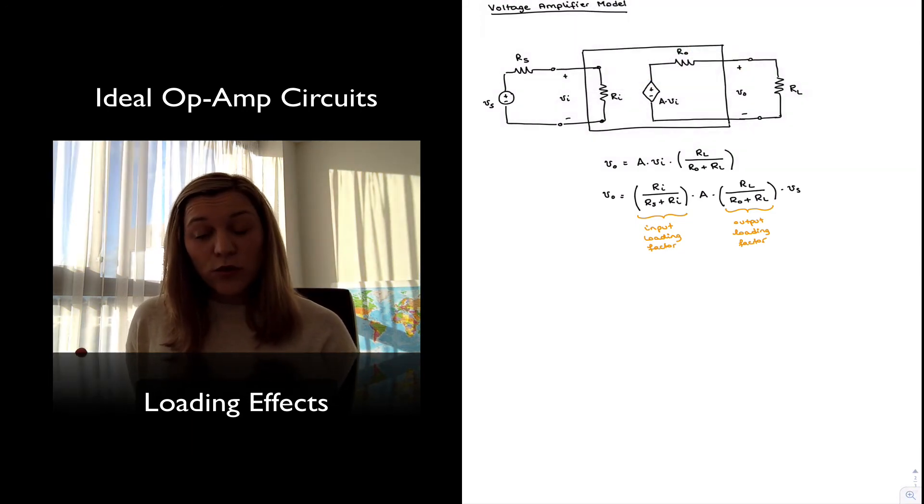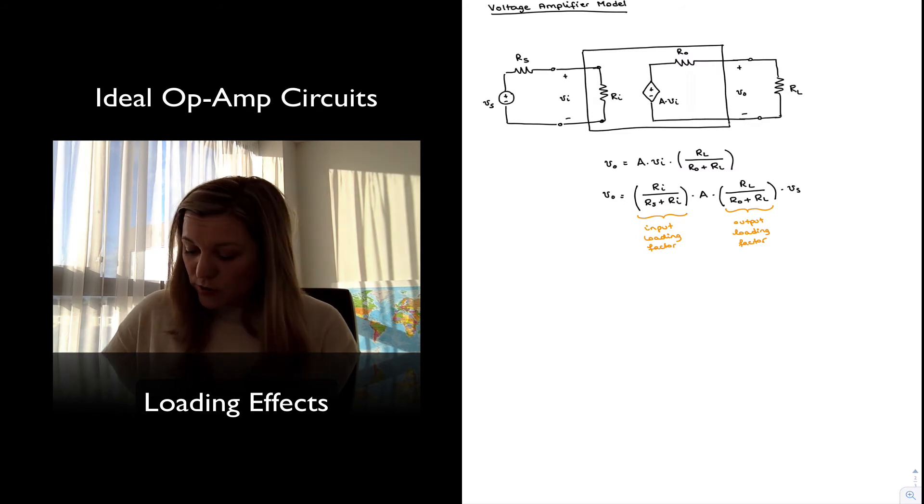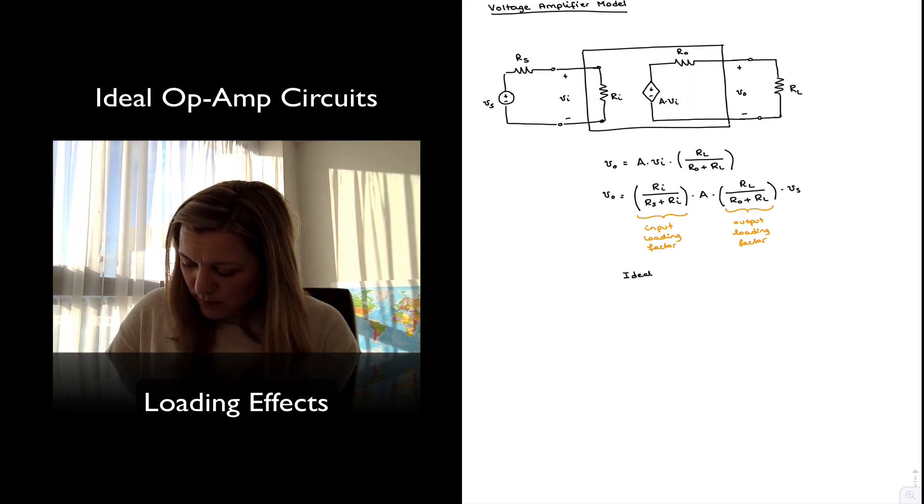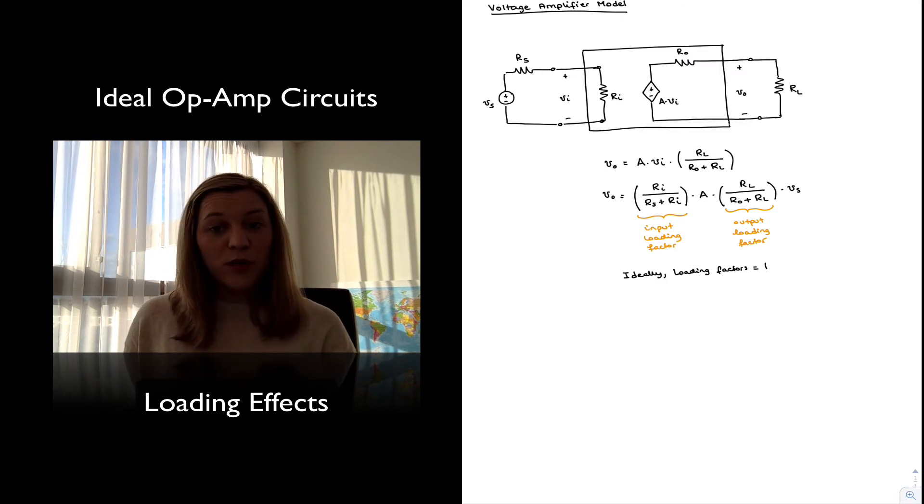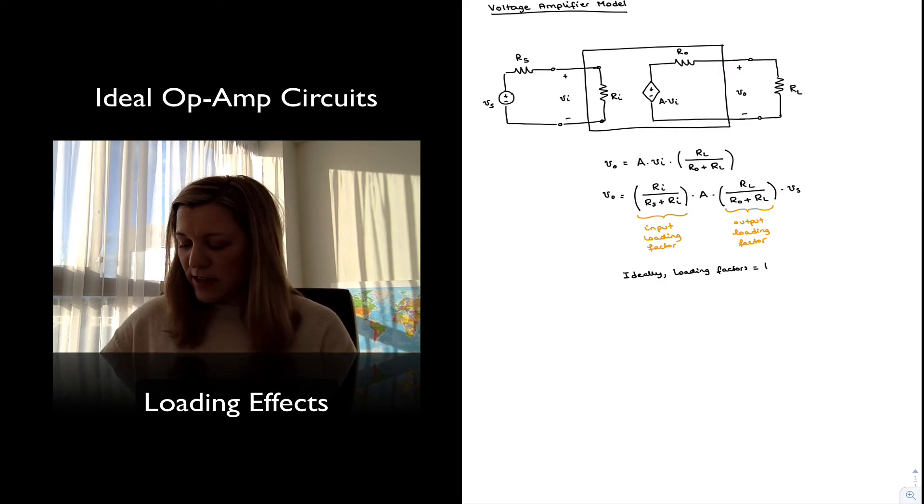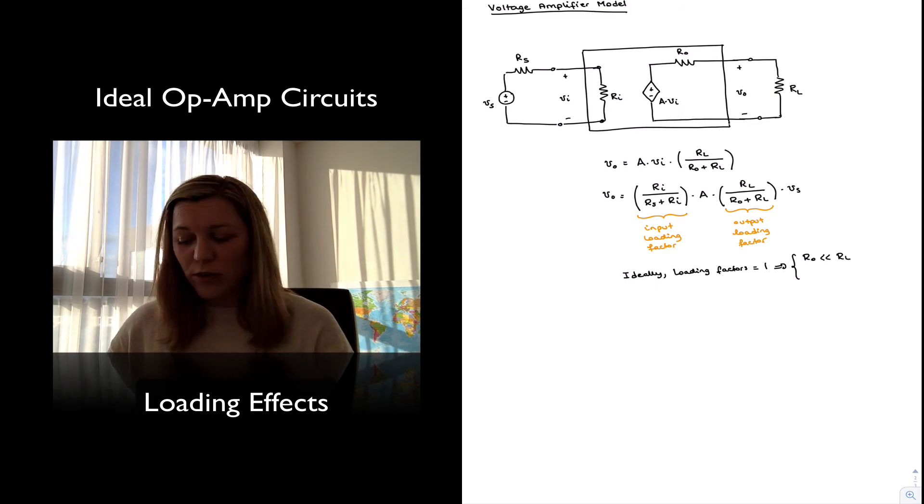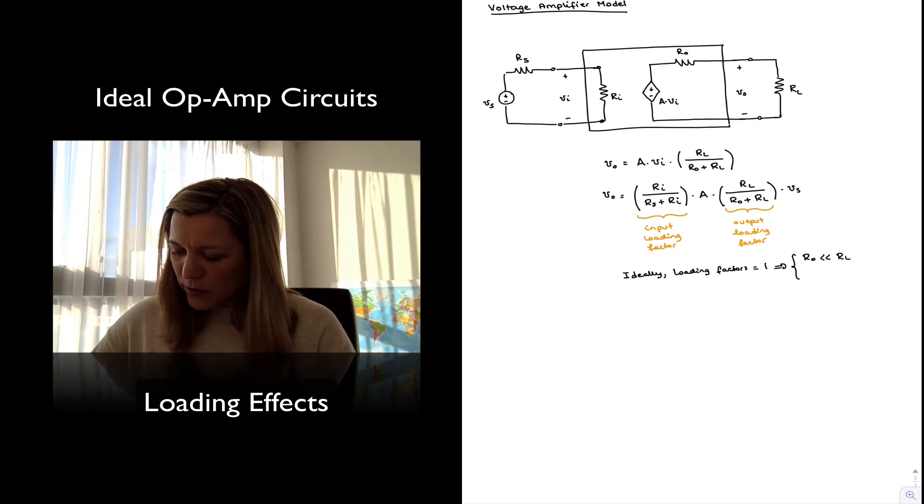Now ideally, those loading factors are equal to 1, so the output is equal to the gain times VS. In reality, this is only true whenever the condition is met that the load resistance is much greater than the output resistance, or vice versa, the output resistance is much smaller than the load, and that the input resistance is much greater than the source resistance.